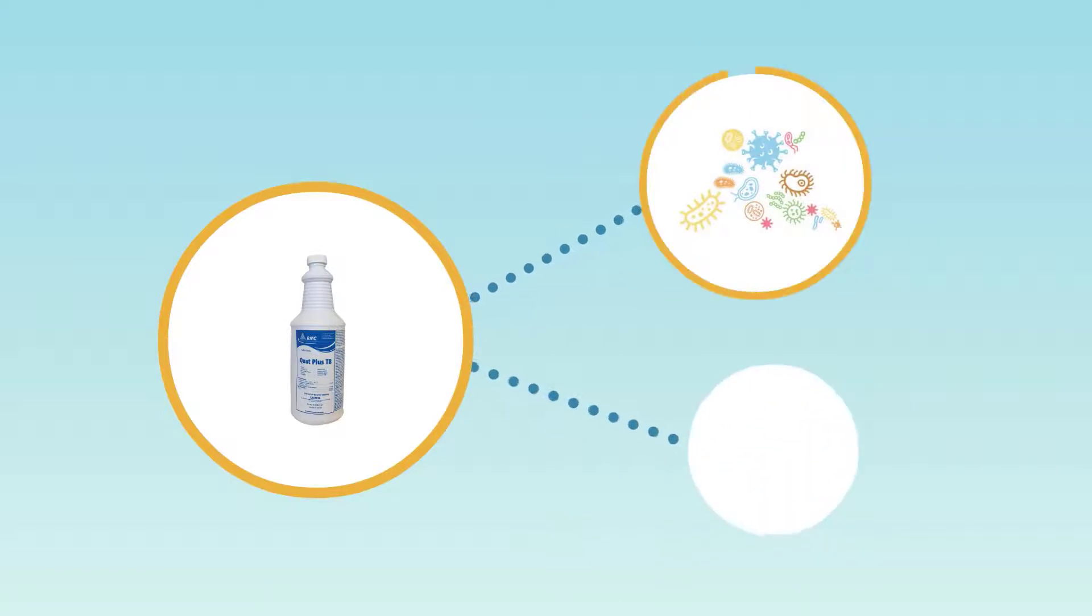Quat Plus TB is a one-step hospital-grade disinfectant and cleaner that kills many viruses and bacteria, including COVID-19.